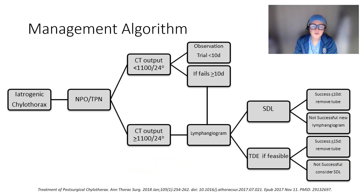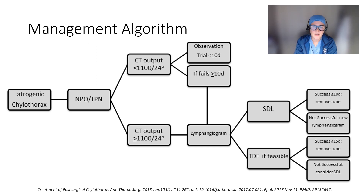When a patient presents with an iatrogenic chylothorax, we recommend making the patient nil per os and placing them on TPN. When chest tube output is less than 1 liter or 1100 cc over a 24-hour period, we recommend a trial of observation for up to 10 days. If this fails or more than 10 days go by, the patient can undergo a lymphangiogram to evaluate the lymphatic drainage system and determine the next best treatment.